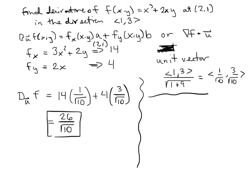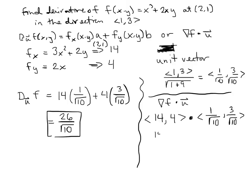Using the gradient method: the gradient vector has the partial with respect to x in the x-component and the partial with respect to y in the y-component, then we dot it with the unit vector. We multiply the x-components together and add the y-components multiplied together: 14·(1/√10) + 4·(3/√10) = 26/√10, the exact same answer. That covers all the basics of the directional derivative.